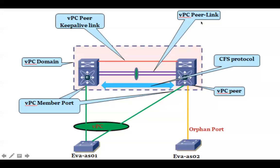The peer link is a Layer 2 trunk link which is used to synchronize control plane information between VPC peers using CFS protocol — Cisco Fabric Services protocol. This will be enabled as soon as we enable VPC. VPC member ports are the interfaces taking part in a port channel, or we can say they belong to VPC. A pair of Nexus switches participating in a VPC domain will be known as VPC peers.